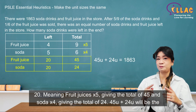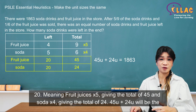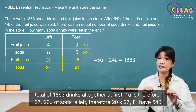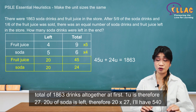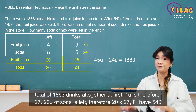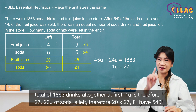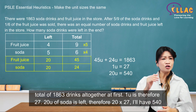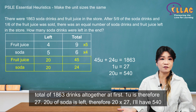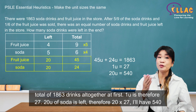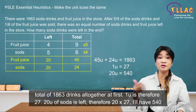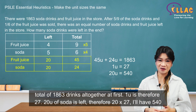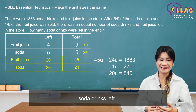45 units plus 24 units will be the total of 1,863 drinks altogether at first. 1 unit is therefore 27. There are 20 units of soda left, so 20 times 27 gives 540 soda drinks left.